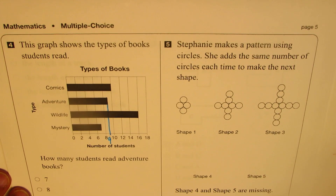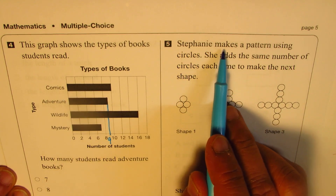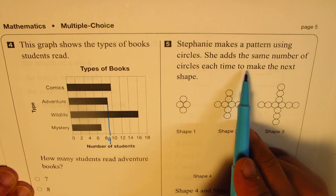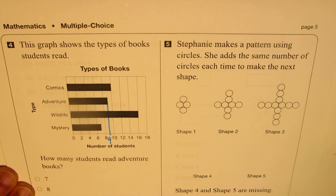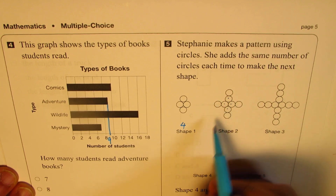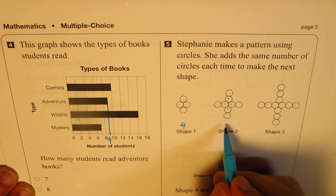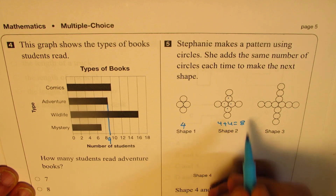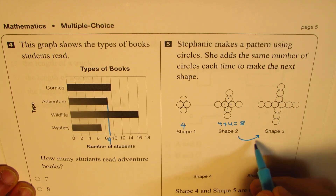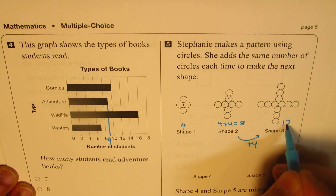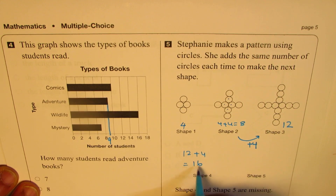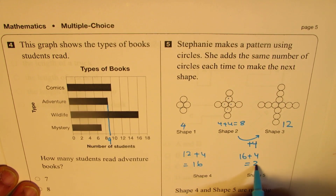Question number 5: Stephanie makes a pattern using circles and adds the same number of circles each time to make the next shape. The first shape has 4 circles. The second shape has those 4 plus 4 more, so it becomes 8. Then 4 more are added again to make 12. So each time we are adding 4. The next shape should be 12 plus 4, which is 16, and then 16 plus 4 gives us 20.